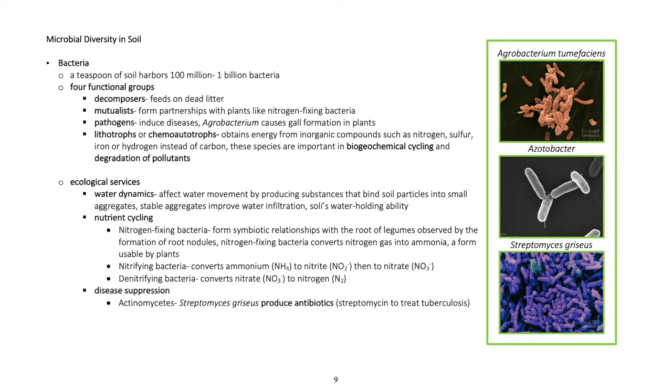Mutualists form partnerships with plants, like nitrogen-fixing bacteria. Pathogens induce diseases. Agrobacterium causes gall formation in plants. Lithotrophs or chemoautotrophs obtain energy from inorganic compounds such as nitrogen, sulfur, iron, or hydrogen instead of carbon.